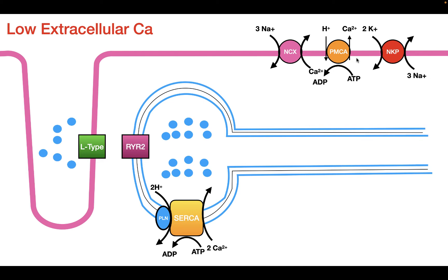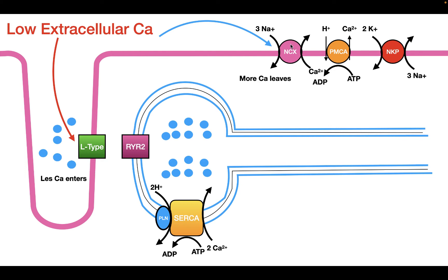Another negative inotropic agent is low extracellular calcium. Low extracellular calcium decreases the amount of calcium that enters the cell through the L-type calcium channels — if you have less calcium outside, less calcium from the outside goes to the inside. Additionally, low extracellular calcium stimulates the sodium-calcium exchanger, because it makes it easier for calcium to be moved out of the cell. Since the sodium-calcium exchanger moves calcium against its electrochemical gradient, decreasing calcium concentration outside makes it easier for the exchanger to move calcium to the outside, so more calcium leaves the cell. Because more calcium is leaving and less is entering, this causes a decrease in cytosolic calcium levels, which leads to a decrease in contractility.